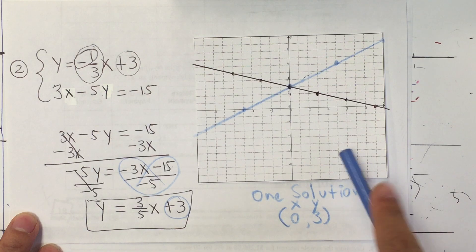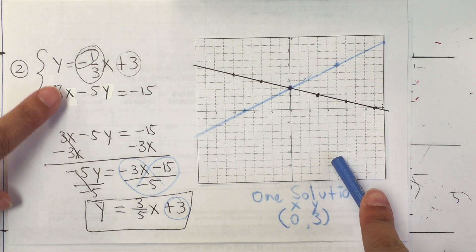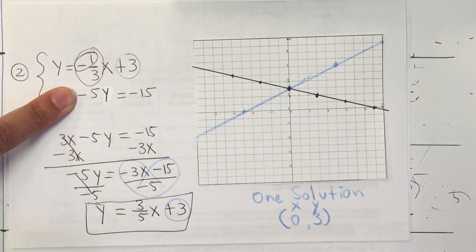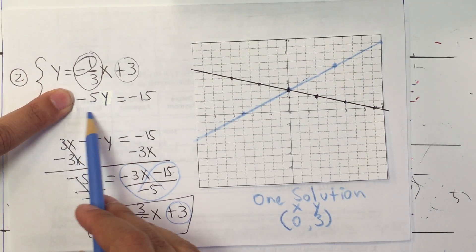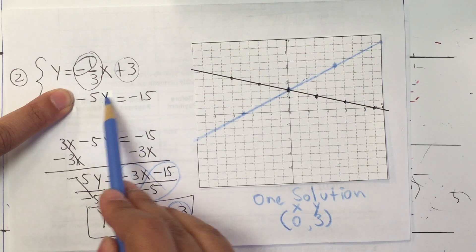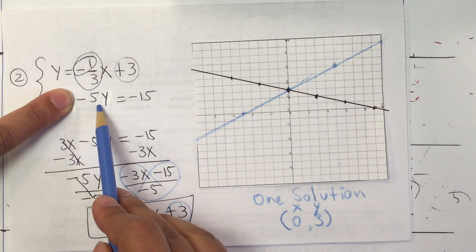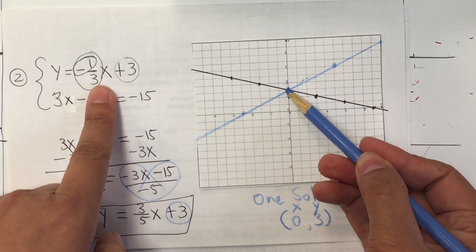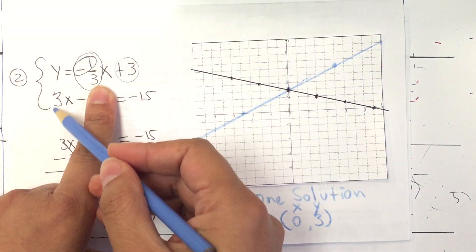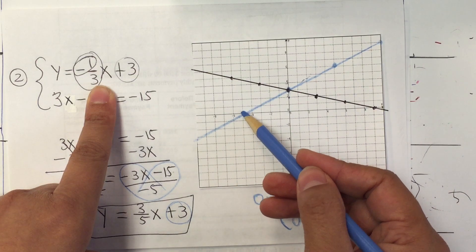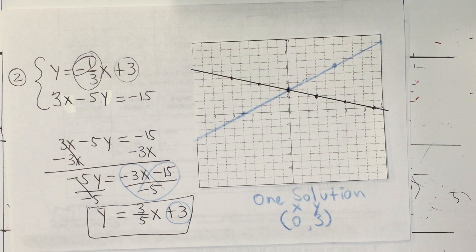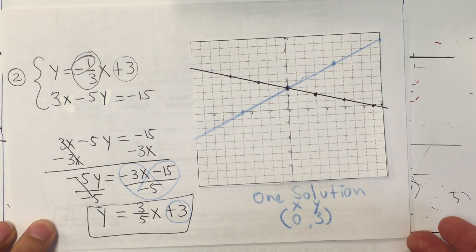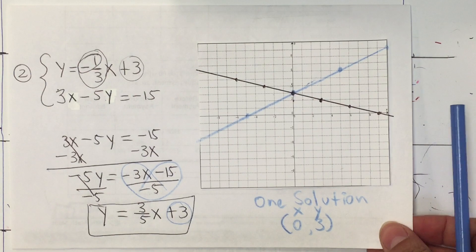If you wanted to use the intercepts: replace x with 0, that term disappears, divide both sides by negative 5, and your y-intercept is negative 15 divided by negative 5 = positive 3. Cover the other one: negative 15 divided by 3 is negative 5 — those are your two intercepts. You saw that in a previous module, so maybe that helps you remember. One more example.